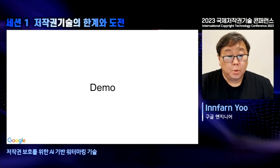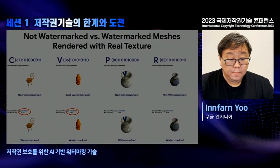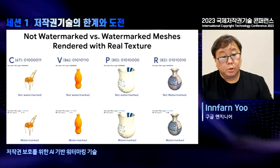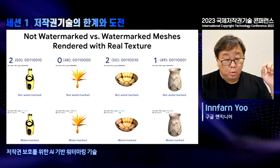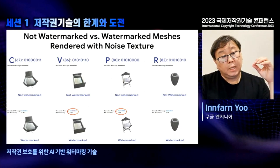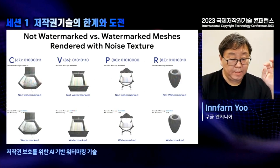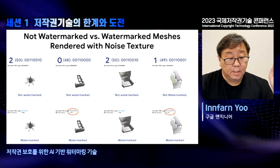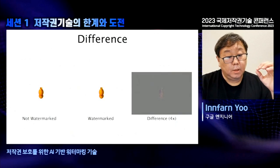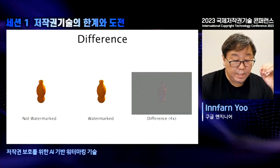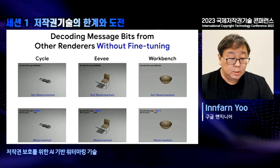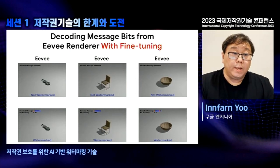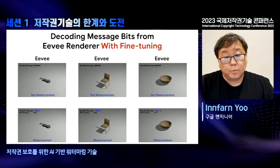Now we will show some short video demos. In this demo, the top shows the non-watermarked and the bottom shows the watermarked video. The number of decoded bits changes over time, but it stays mostly at 1, meaning we can perfectly decode the messages. We are testing 8-bit embedding and decoding, and the accuracy of this video is mostly 1. The difference map is pretty small. We also tested non-watermarked versus watermarked with ray tracers, and the non-differentiable ray tracer renderer can still decode messages.